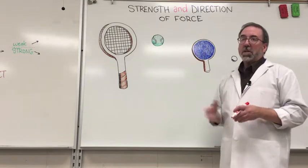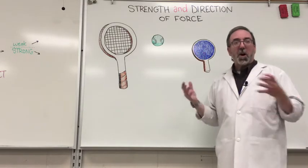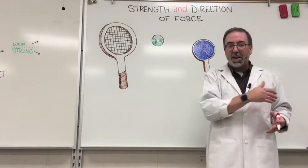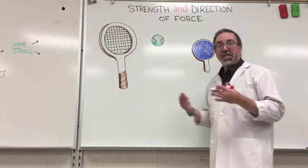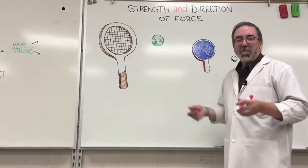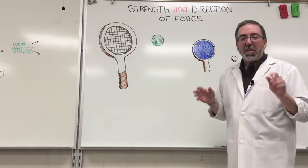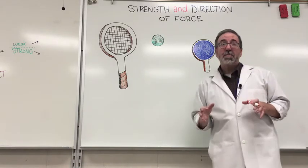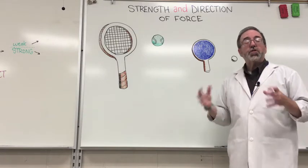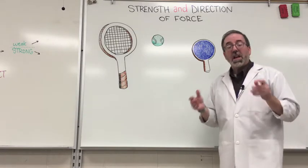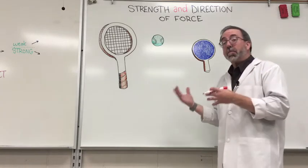We're going to look at the arrows — we're going to talk about this all year. We've already talked about it a lot with speed, velocity, displacement, and distance. The arrows are always red. The length of the arrow shows the strength of the force, and the direction the arrow is pointing shows the direction in which the force is being applied.